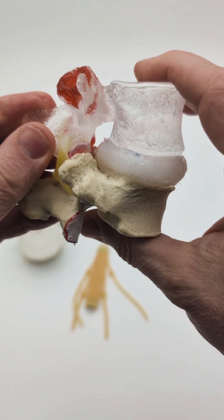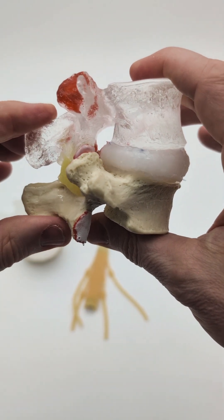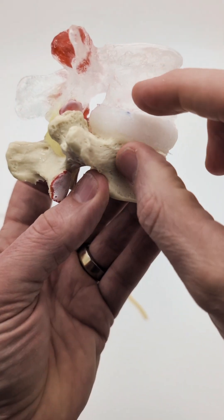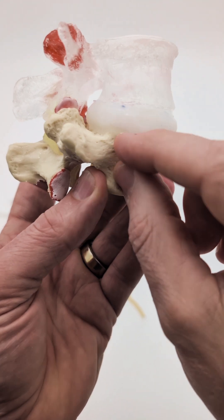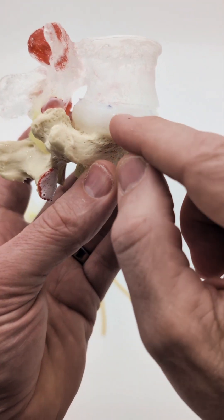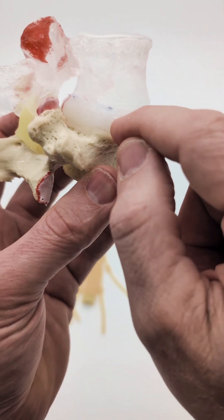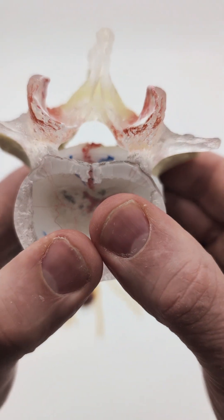With flexion, it will drive the nucleus posteriorly. As you notice, we have good disc height, and so of course there's going to be a good amount of nucleus in here to be able to drive posteriorly.